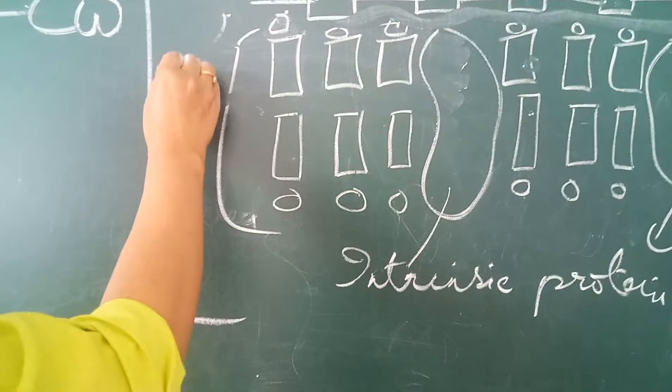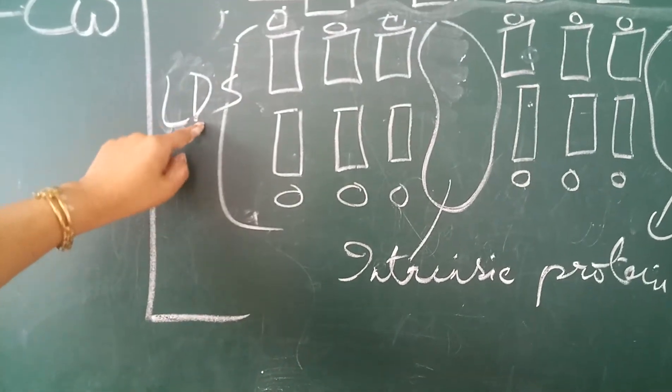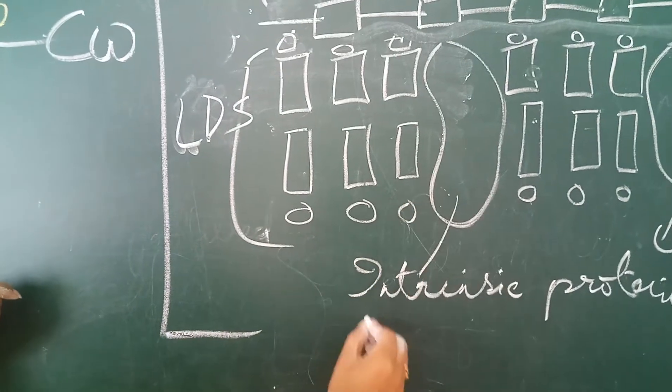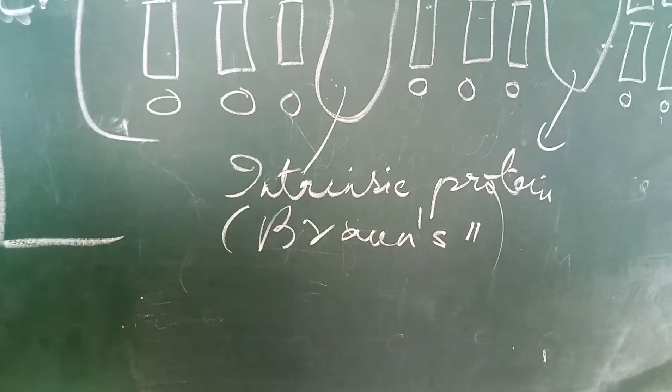Now, this layer is also known as the LDS layer. And these proteins in some books, they are also known as the bronze protein.